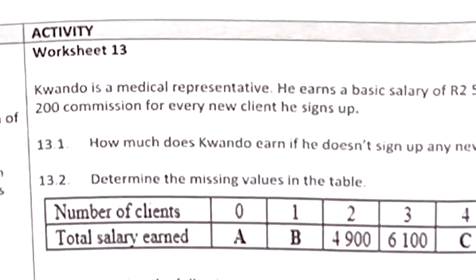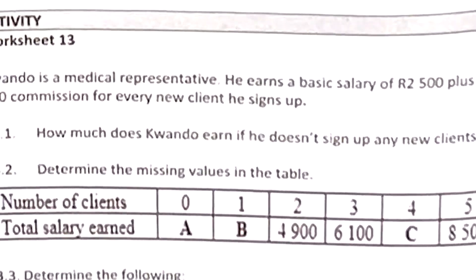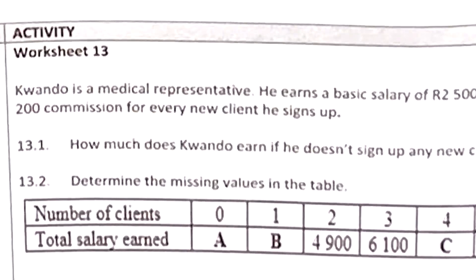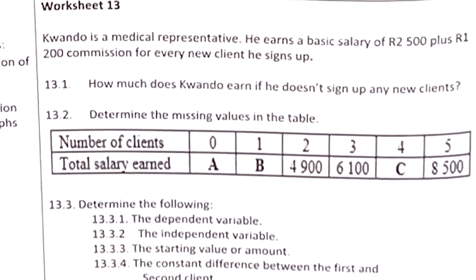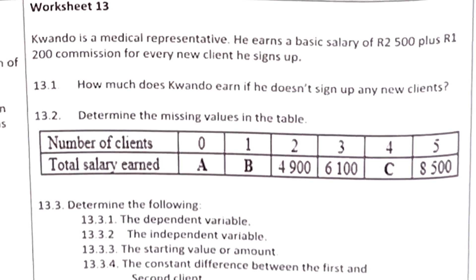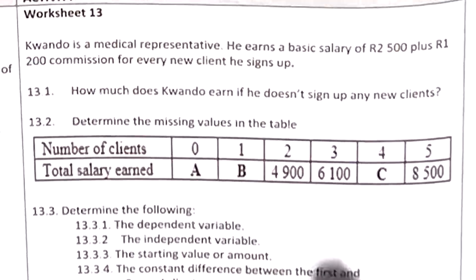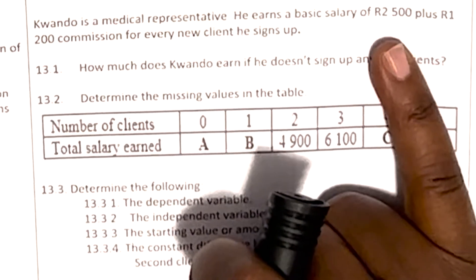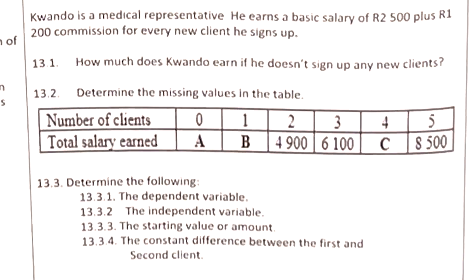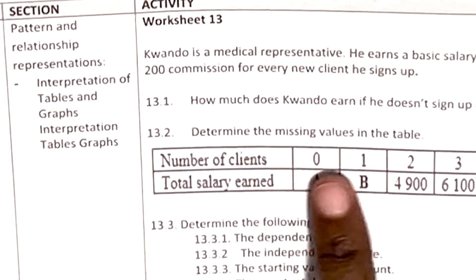Our example says Guando is a medical representative. He earns a basic salary of R2 500 plus R1 200 commission for every new client he signs up. The first question asks how much does Guando earn if he doesn't sign up any new client. He earns the basic salary of R2 500, so the answer for 13.1 is R2 500.